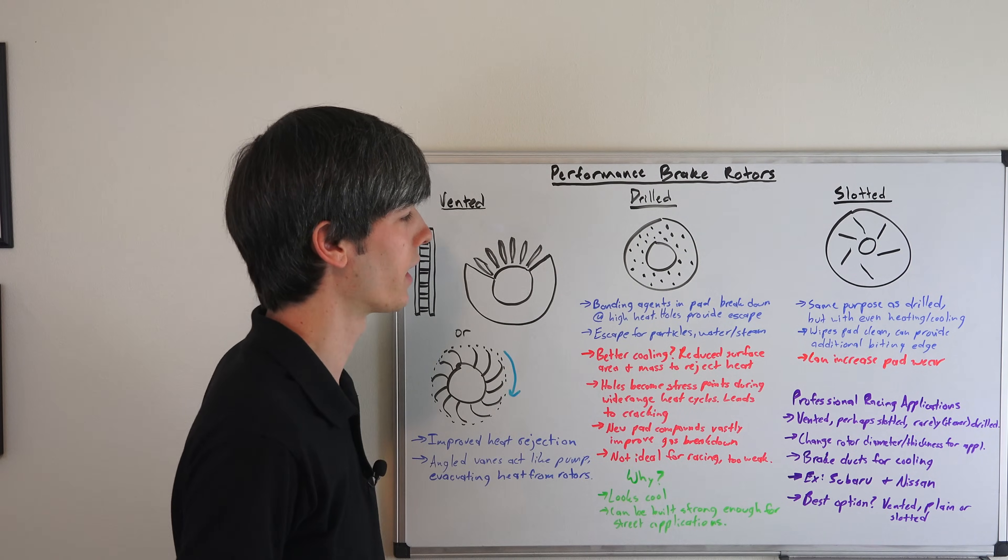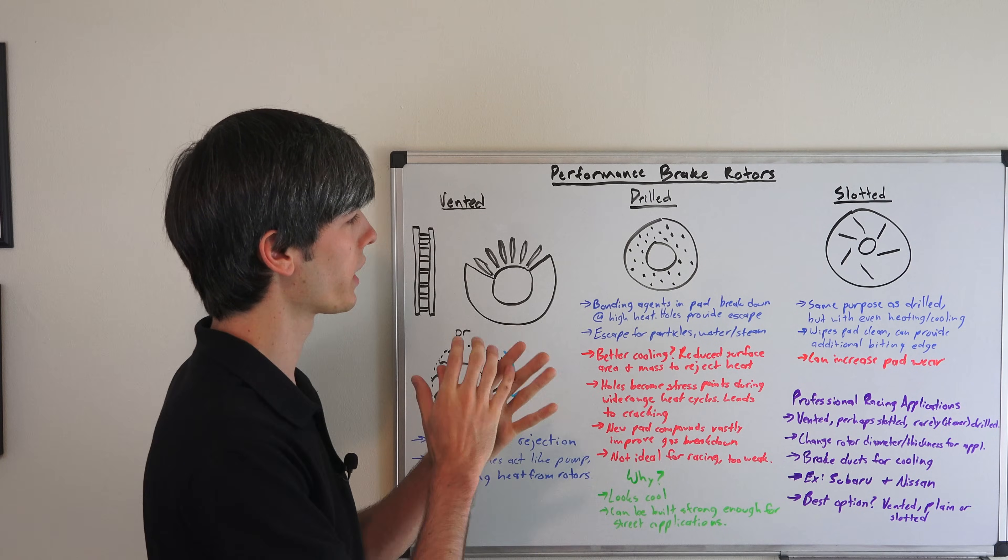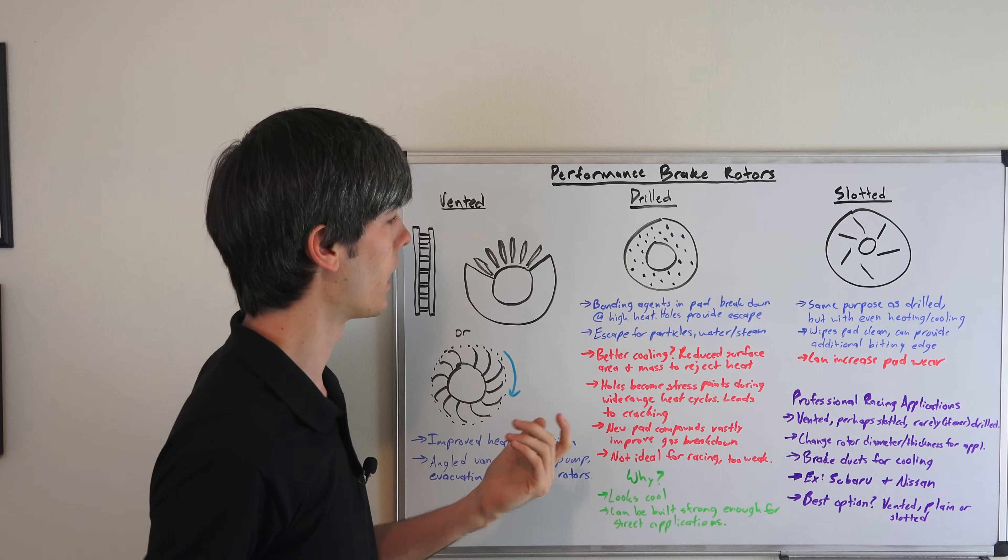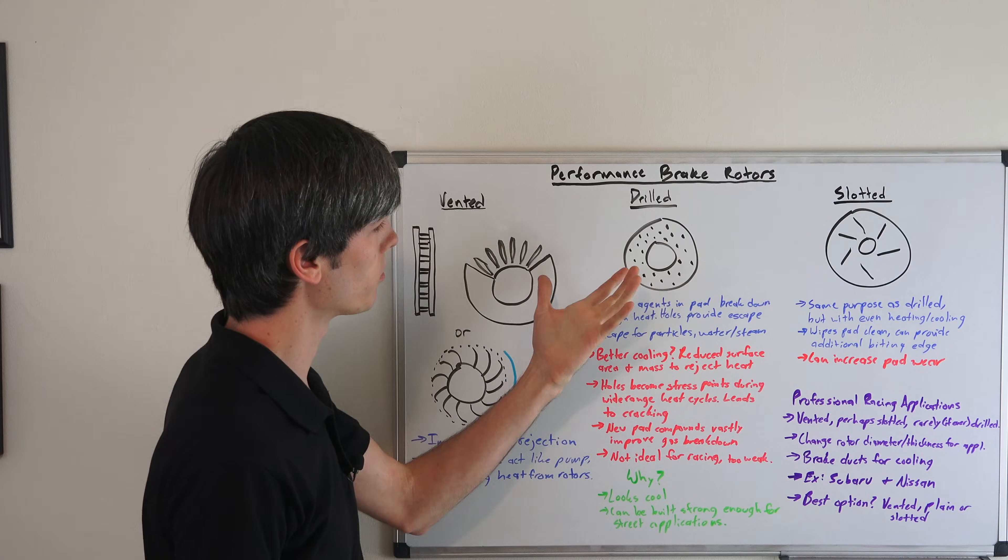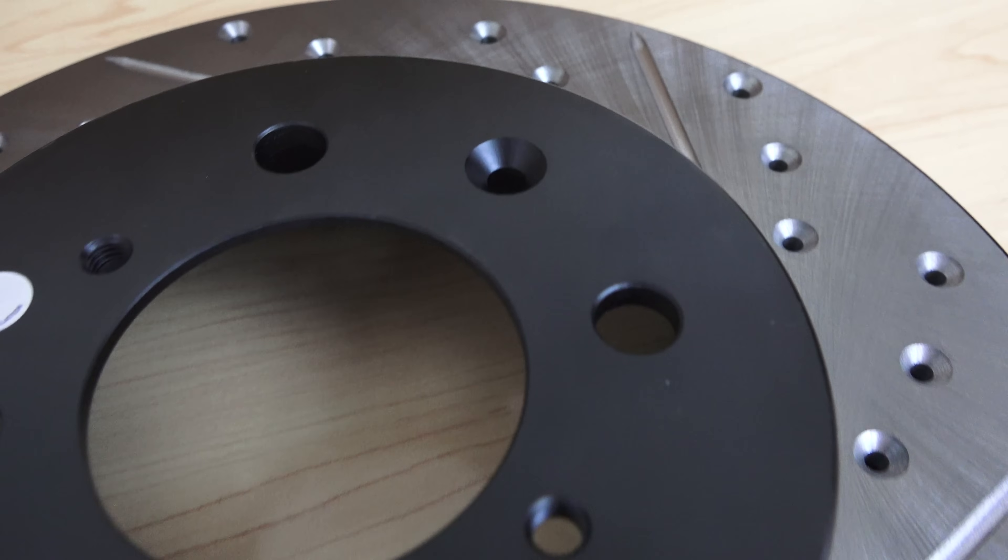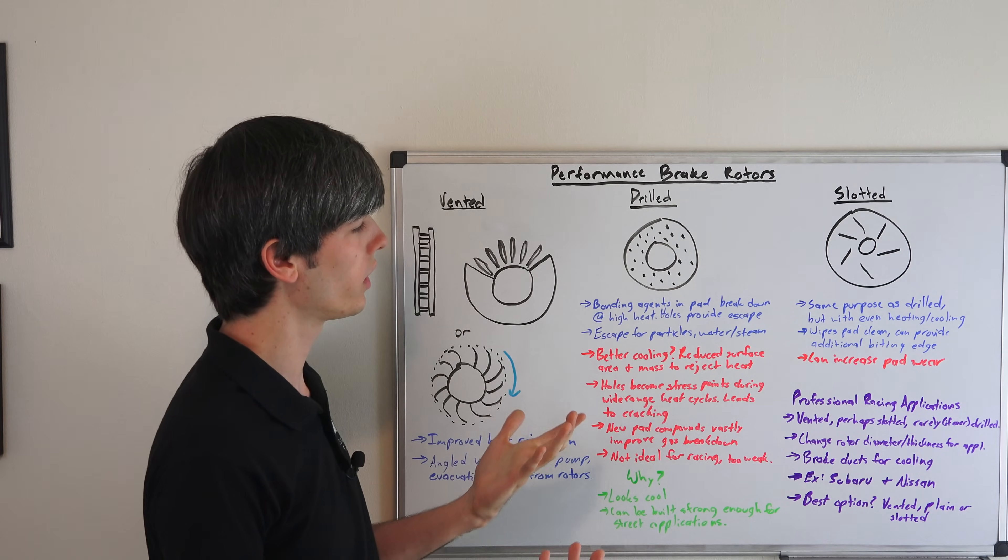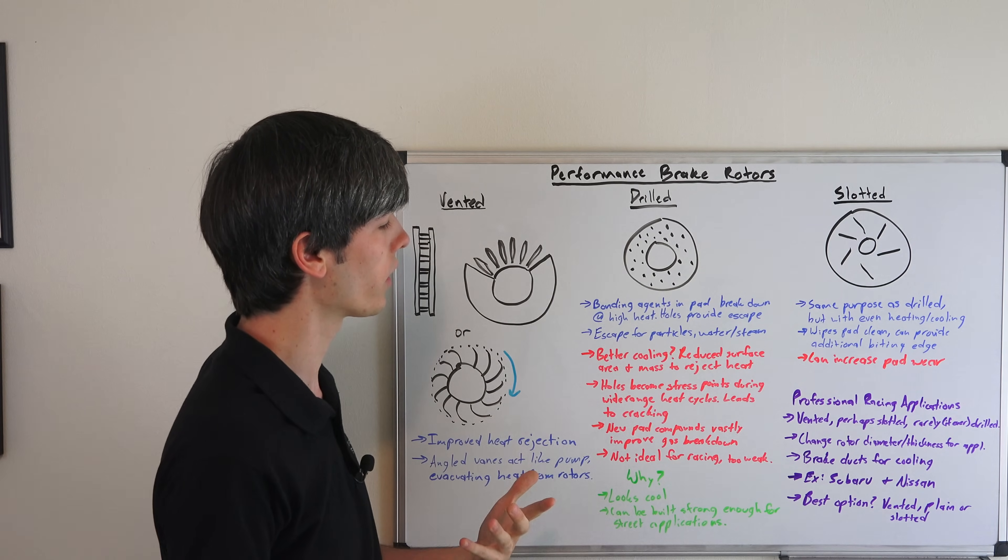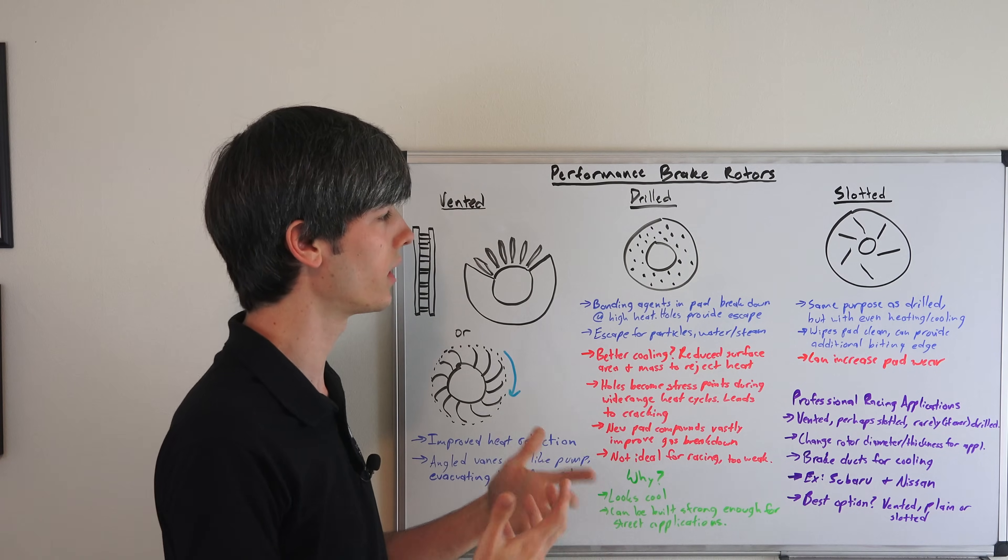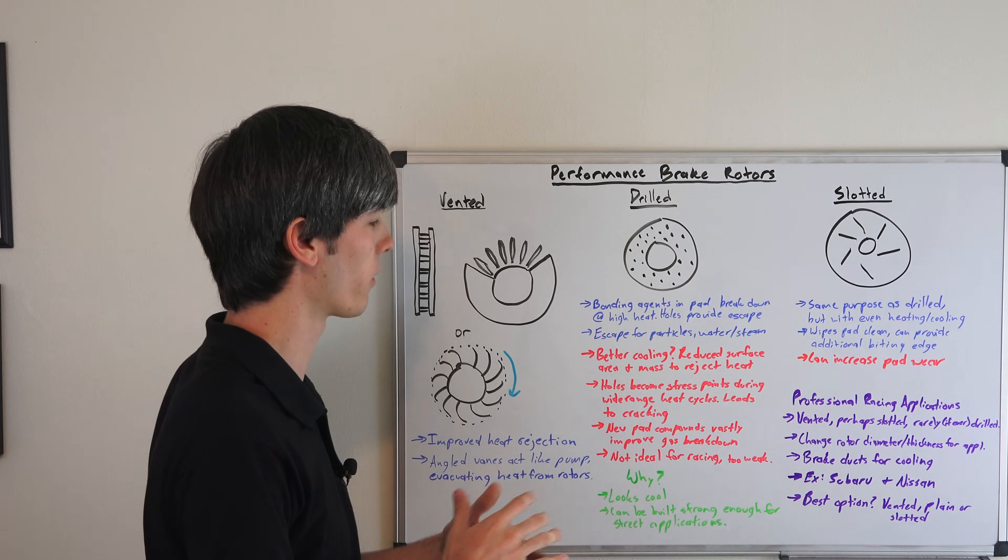Now the bonding agents these days are much better, so you don't really have that gas gap in there. There are some disadvantages as well. You may think, 'Oh, it's got all these air holes, that's going to be better for cooling.' Well, the other thing you need to think about is you have a reduced surface area and less mass to reject heat into, so it's not necessarily a beneficial trade-off.